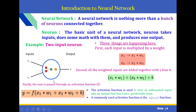Finally, you find the output. Y is a function F of X1 times W1 plus X2 times W2 plus the bias. This function F is called the activation function. The activation function is used to turn an unbounded input into an output that has a nice predictable form. A commonly used activation function is the sigmoid function, which is an important function in neural networks.